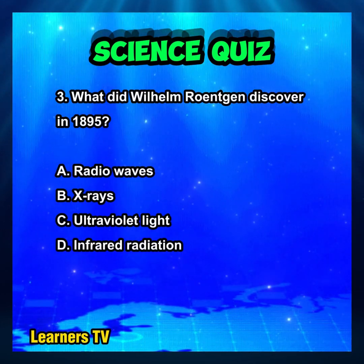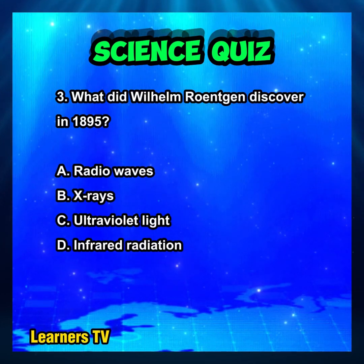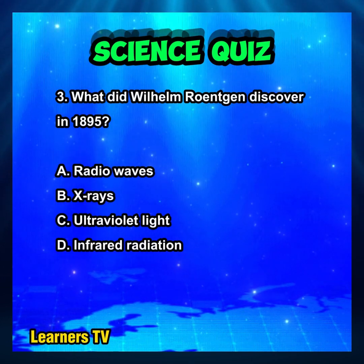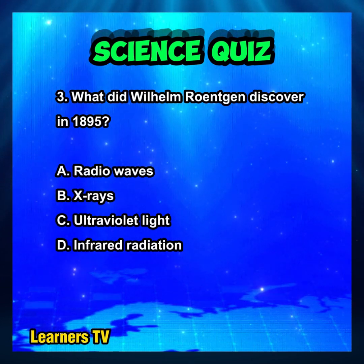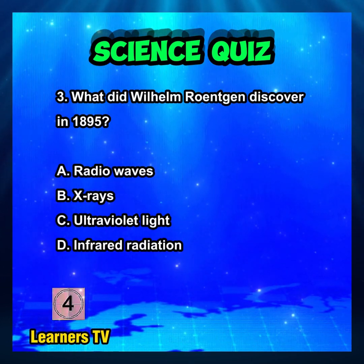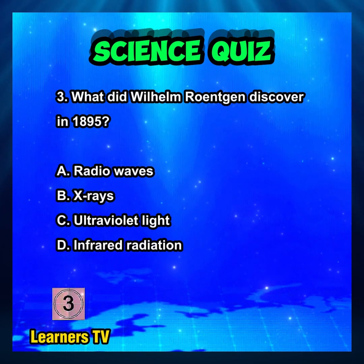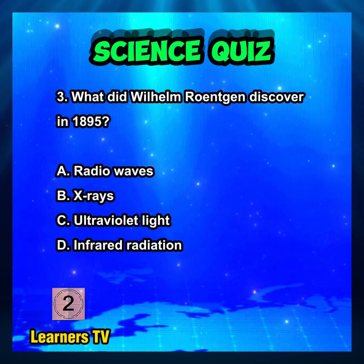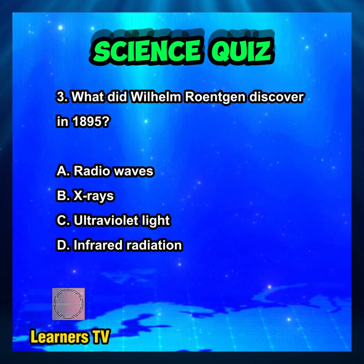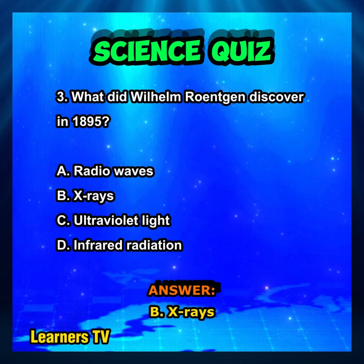What did Wilhelm Röntgen discover in 1895? A. Radio waves. B. X-rays. C. Ultraviolet light. D. Infrared radiation.